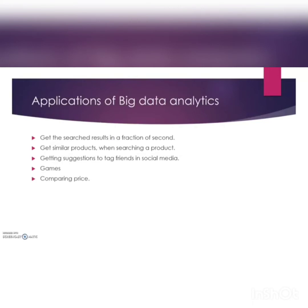Fifth application: comparing prices. If you want to buy a television, price comparison websites collect information from multiple online shopping sites so you can compare prices easily. So the five applications are: getting search results quickly, getting similar products, getting friend suggestions in social media, games, and comparing prices.